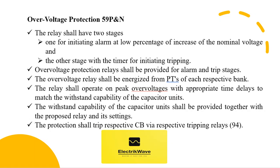The over voltage protection is to be provided in the scheme of protection with the fundamental voltage sensor with a timer with adjustable time settings. The relay shall have two stages: one for initiating alarm at a low percentage of increase of the nominal voltage, and the other stage with the timer for initiating tripping. Over voltage protection relays shall be provided for alarm and trip stages. The over voltage relay shall be energized from the potential transformer of each respective bank. The relay shall operate on peak over voltages with appropriate time delays to match the withstand capability of the capacitor units. The withstand capability of the capacitor units shall be provided together with the proposed relay and its settings. The protection shall trip the respective circuit breaker via respective tripping relays.